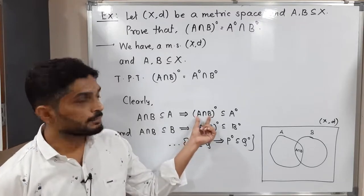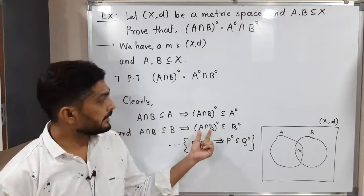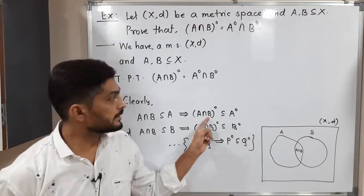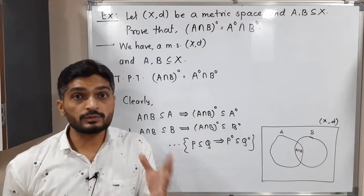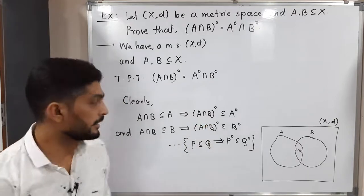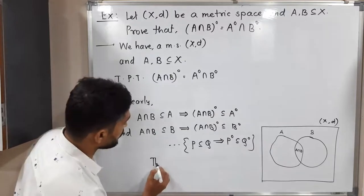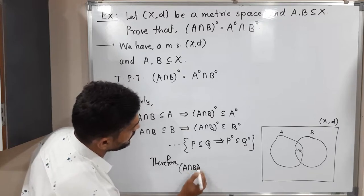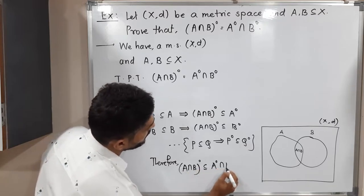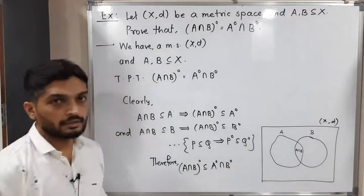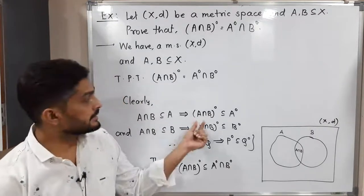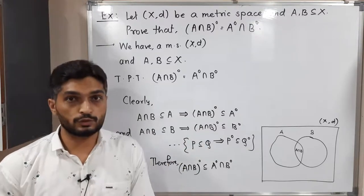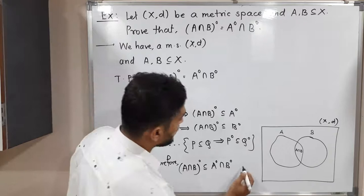So the interior of A intersection B is a subset of the interior of A, and the interior of A intersection B is a subset of the interior of B. That means this set is a subset of both sets, so it lies in their intersection. Therefore, the interior of A intersection B is a subset of the interior of A intersection the interior of B. I'll call this result (1).